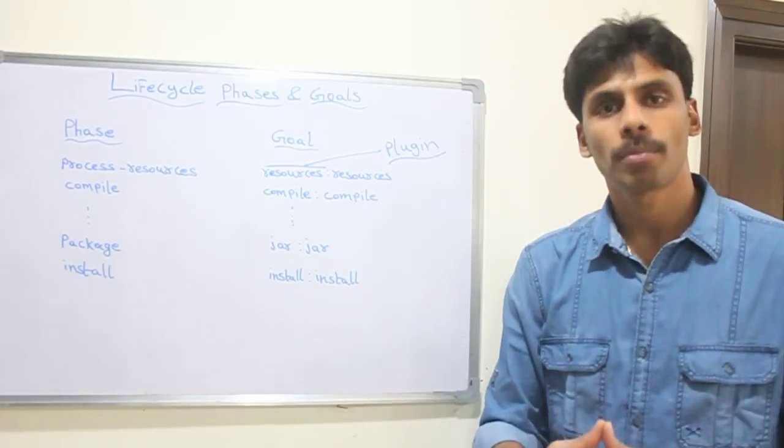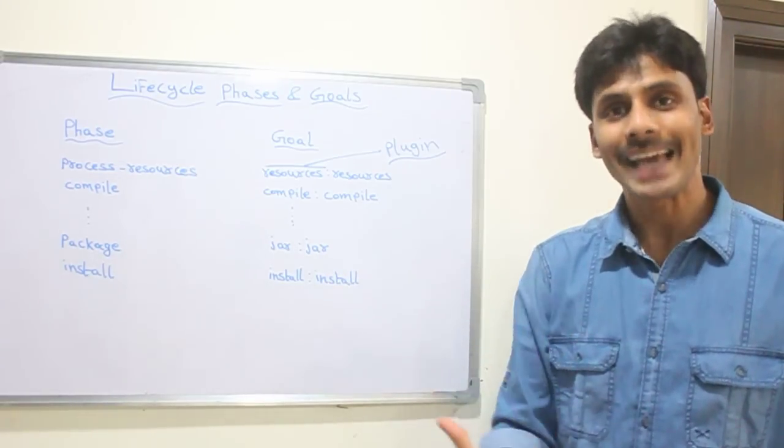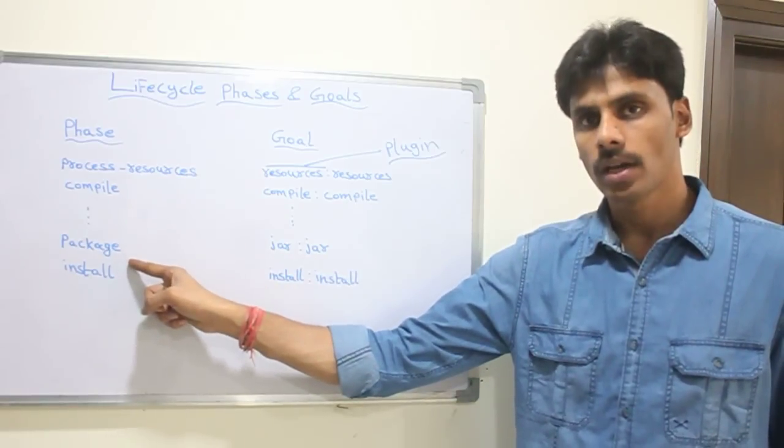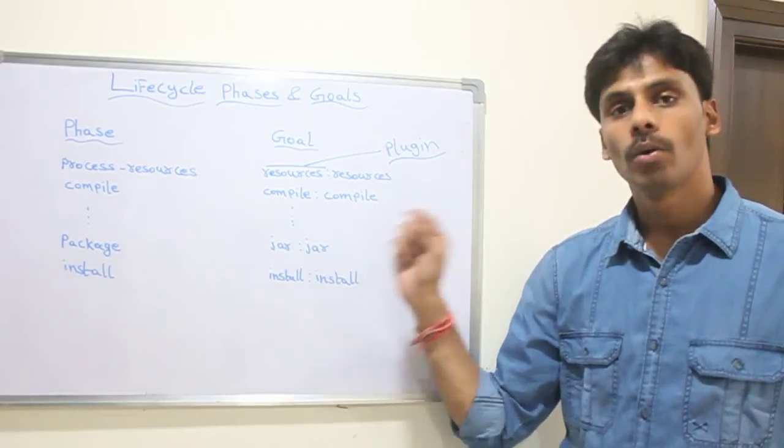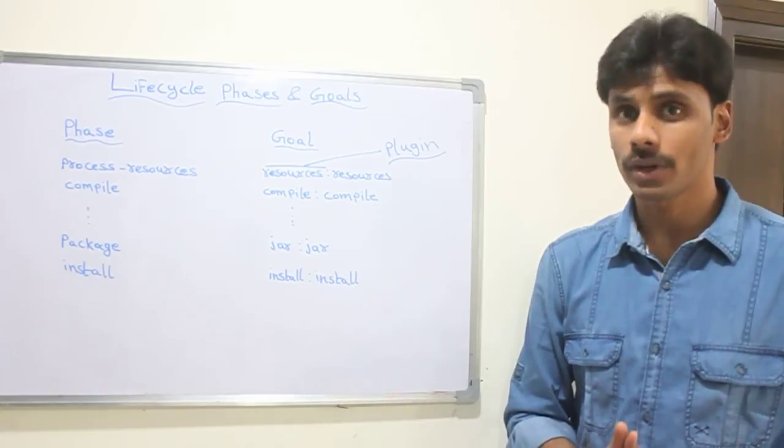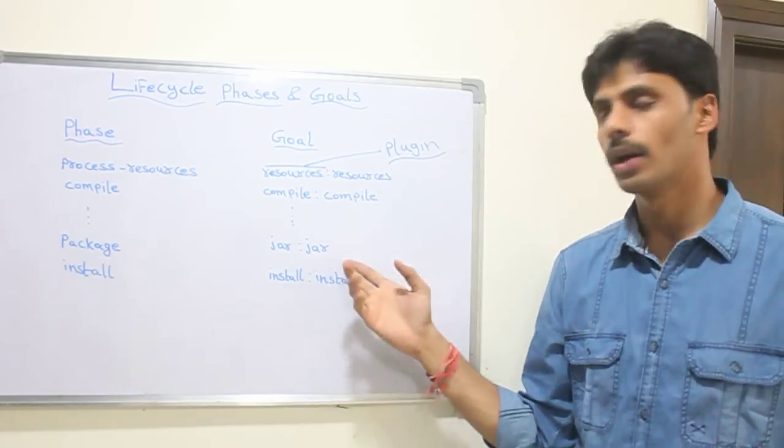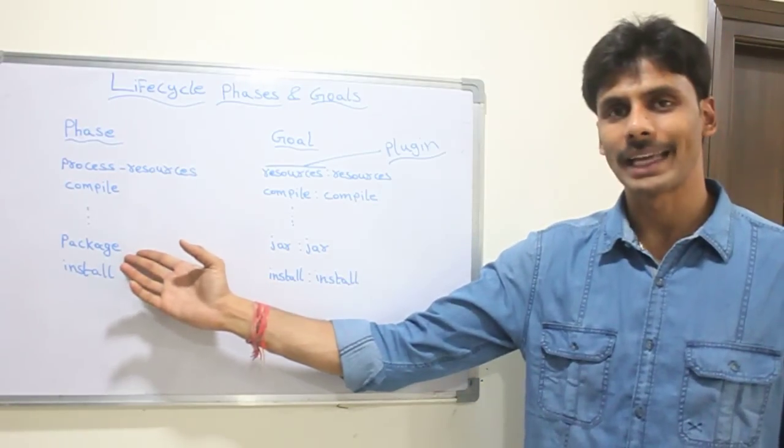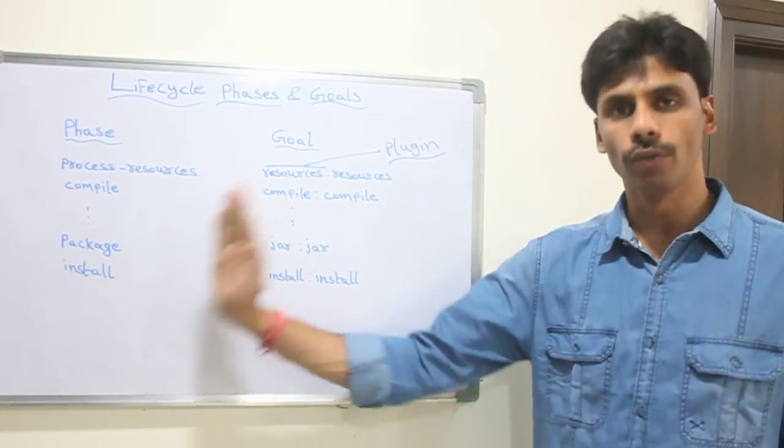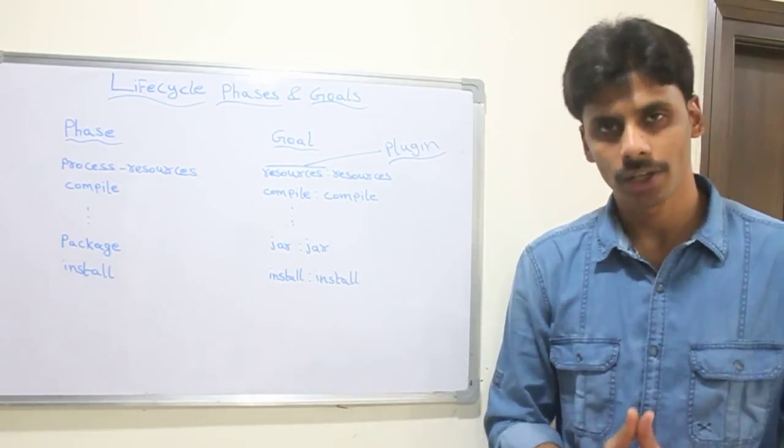For example if your project is a war project or a web project or a EAR project. Instead of binding jar colon jar to the package phase, it will bind war colon war or EAR colon EAR. There is a form project to where it will bind form colon form to your package phase. So maven can dynamically switch the binding of goals to phases depending on the type of project you are creating.